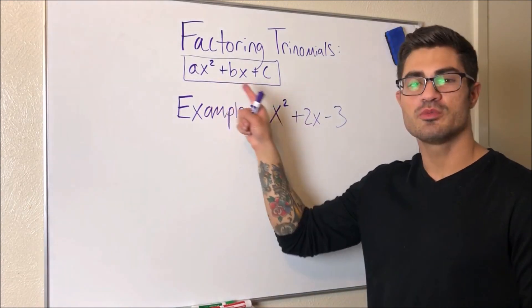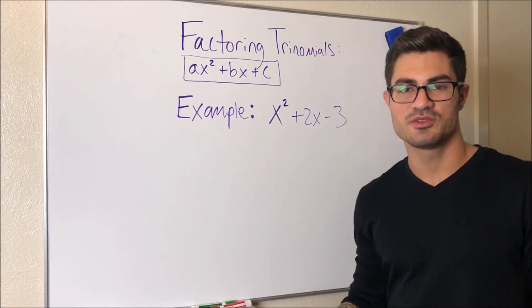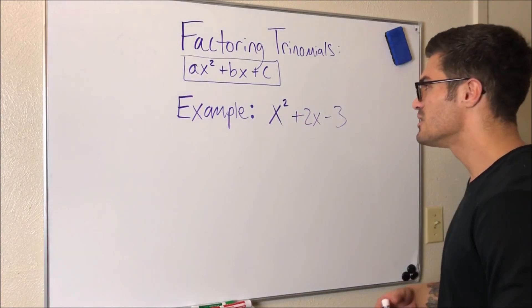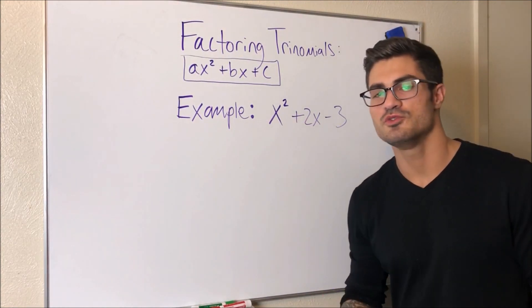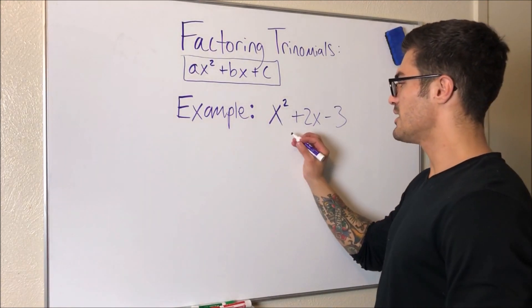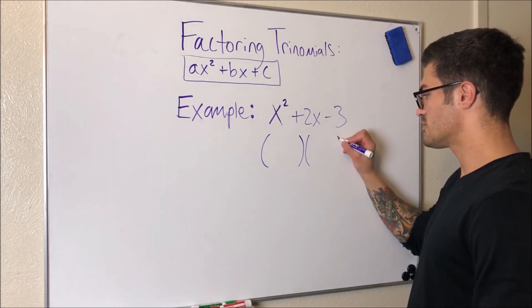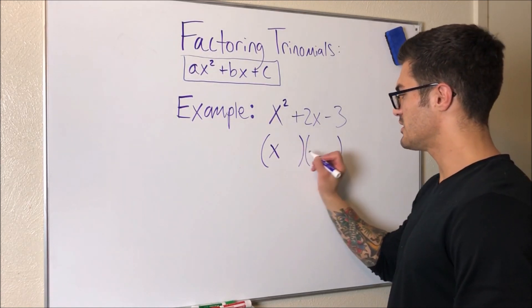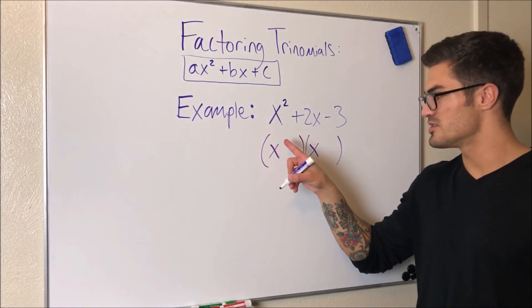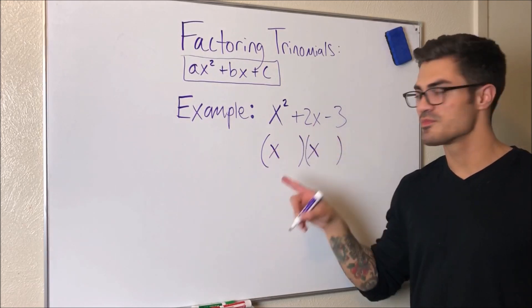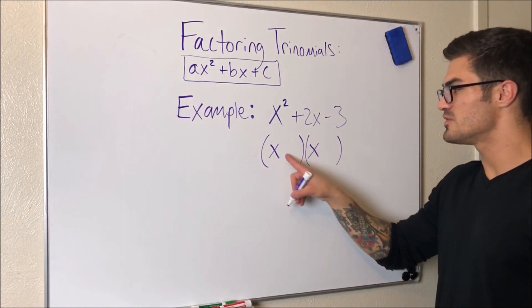So in general terms, we're looking for two things that multiply together to be C and add together to be B. So that's generally what we're going to do when we have a trinomial where a equals one and we're asked to factor it. So what we're actually doing when we're factoring this is we're rewriting it as a product of two binomials. You're always going to have an X and an X when A is one because this times this will give you that first term. So now all we have to do is fill in these blanks.